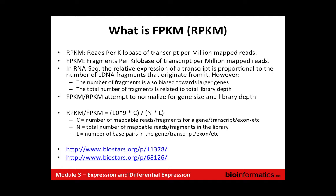In RNA-seq, the relative expression of a transcript is proportional to the number of fragments that originate from it. If you have more fragments of RNA for a particular transcript, you expect more random fragments from it, and therefore more sequences and alignments from that transcript. However, there are important sources of bias. Bigger genes have more space, so when you randomly break up RNA, more fragments tend to come from large genes than small genes simply because there's more RNA there.